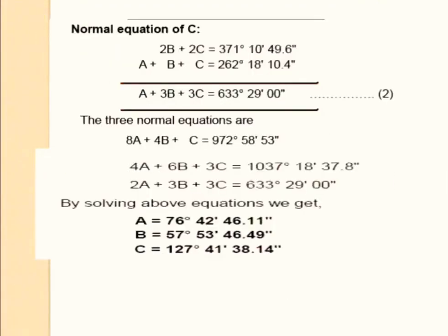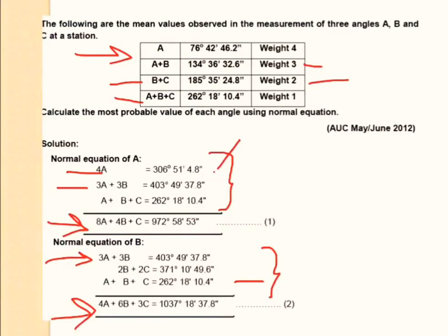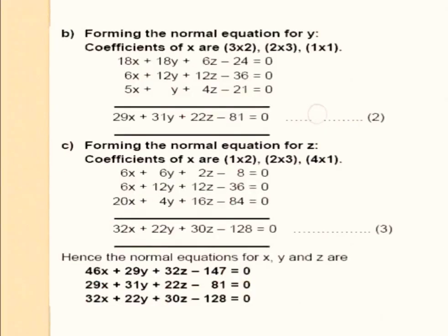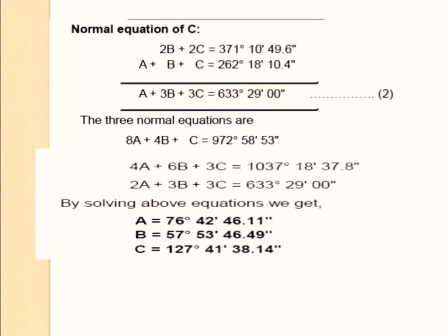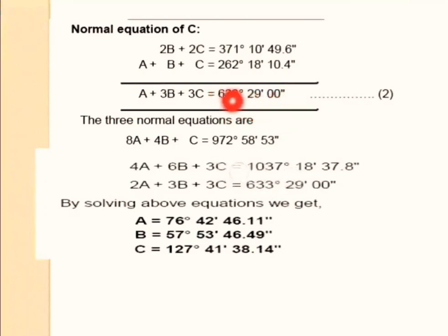The weight of 2 multiplied gives 2B plus 2C is equal to 371 degrees something. That is the last equation with weight 1. The coefficient is 1. Then the final normal equation is A plus 3B plus 3C is equal to 633 degrees 29 minutes 0 seconds.